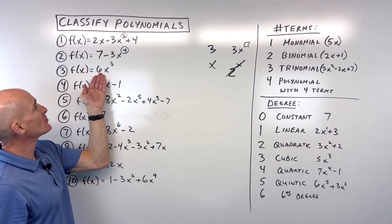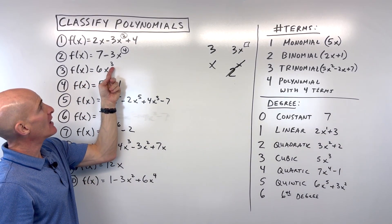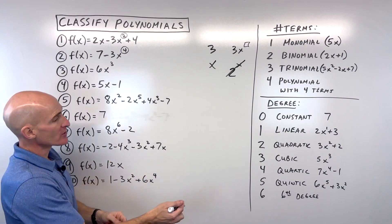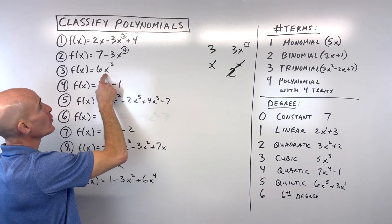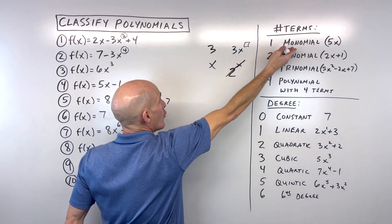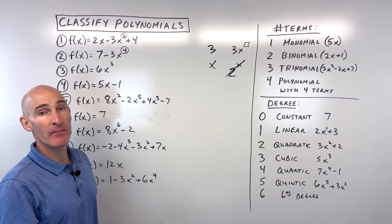Let's go to number three. f(x) = 6x³. Again, this highest power is 3, so we're thinking cubic. Only one term here, we're thinking monomial. So I would say cubic monomial.